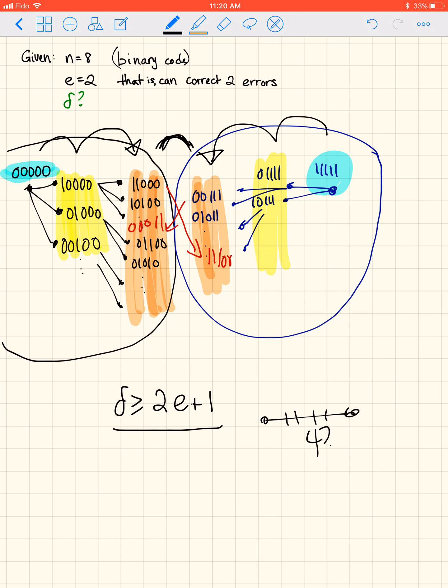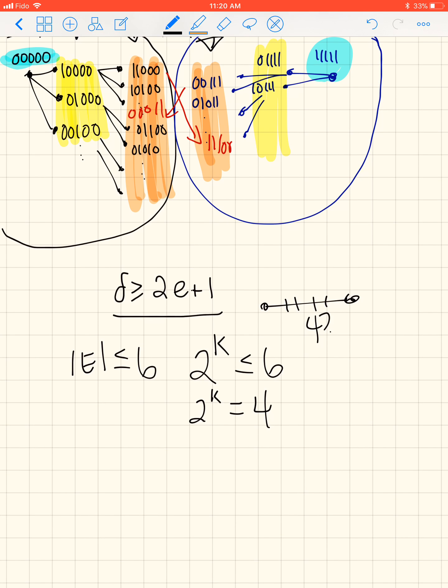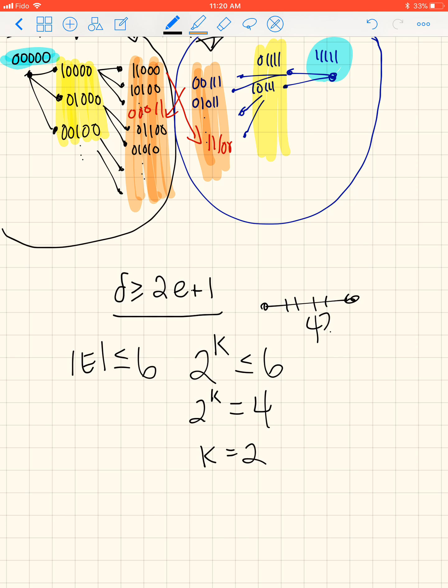We know from the previous question that the number of code words has to be less than or equal to 6, and so since it's a linear code, k is the dimension, not delta. We need 2 to the k to be less than or equal to 6, which means 2 to the k has to be equal to 4. That's going to give us the biggest k. So k is 2. So the dimension of the code is 2.